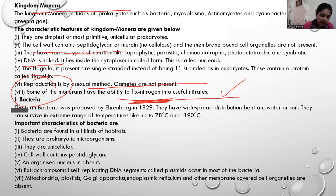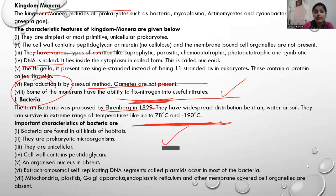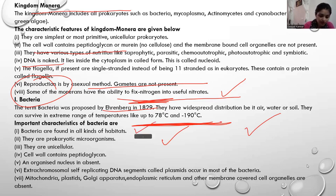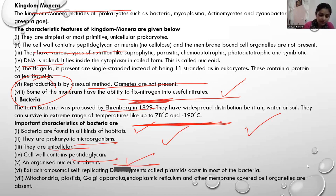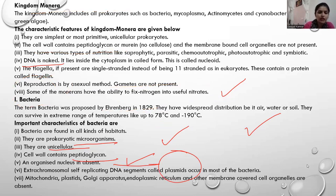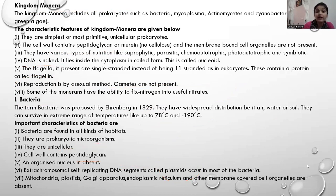So the first is bacteria. Bacteria were first described by Ehrenberg in 1829. An important point is that they can survive in harsh conditions — from -190 degrees Celsius to 78 degrees Celsius, from freezing point to near boiling point. Bacteria are found everywhere. They are prokaryotic, unicellular; their cell wall is made of peptidoglycan; organized nucleus is absent; nuclear membrane is not present; extra-chromosomal DNA called plasmids is present; and organelles like mitochondria, plastids, Golgi apparatus, and endoplasmic reticulum are all absent.